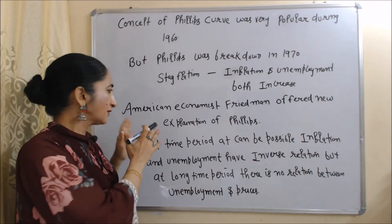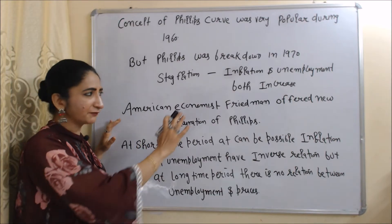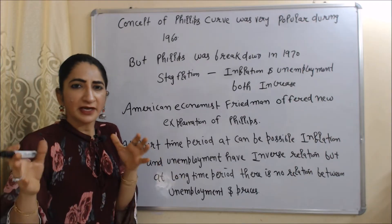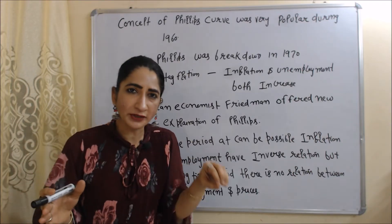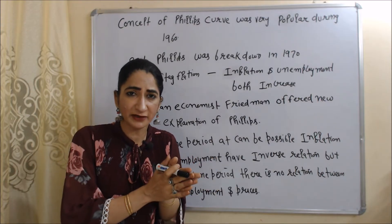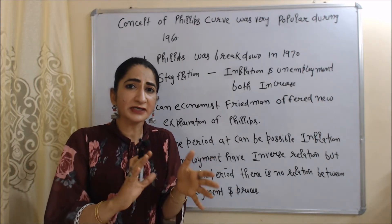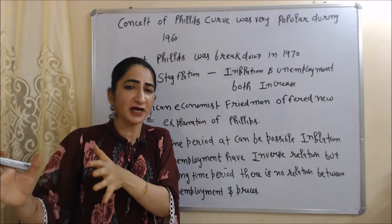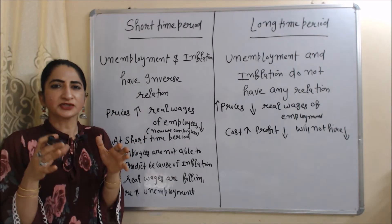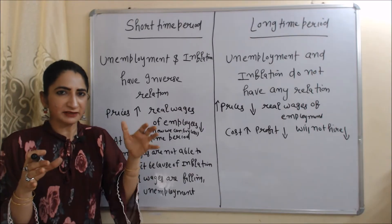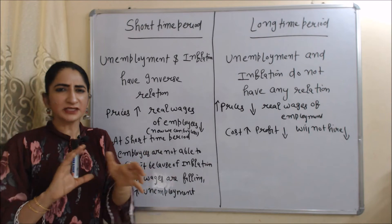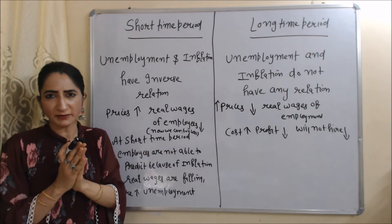American economist Friedman offered a new explanation of the Phillips Curve. According to Friedman, in the short run it is possible for unemployment and inflation to have an inverse relation, but in the long run there is no relation between unemployment and inflation. But why does this difference exist between the short run and the long run?